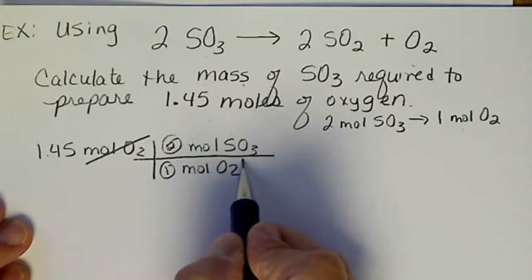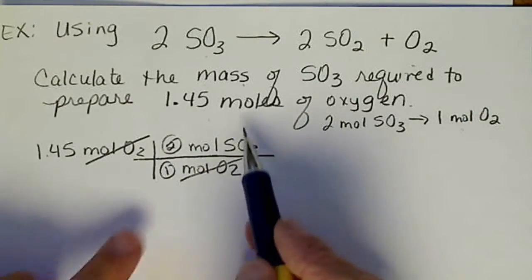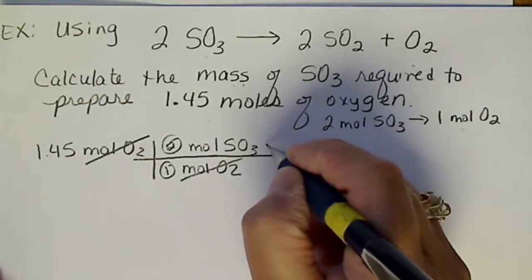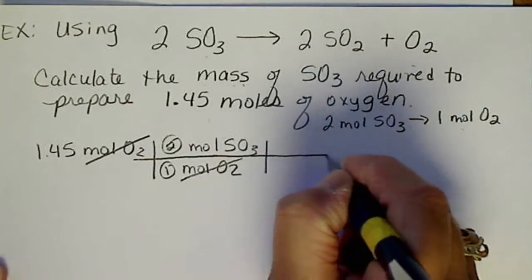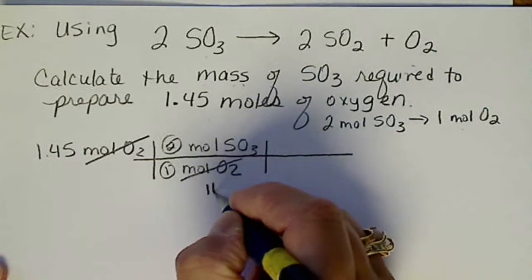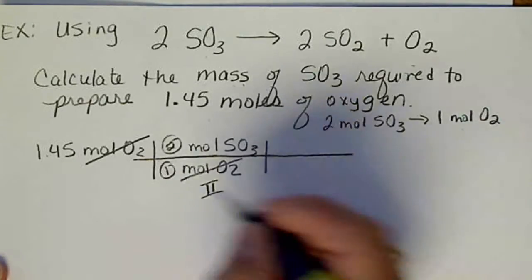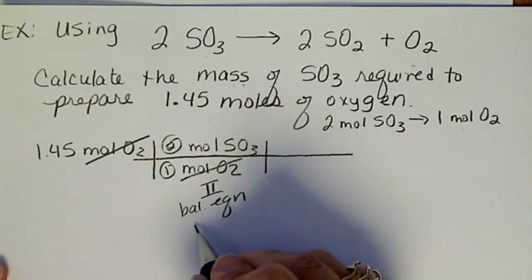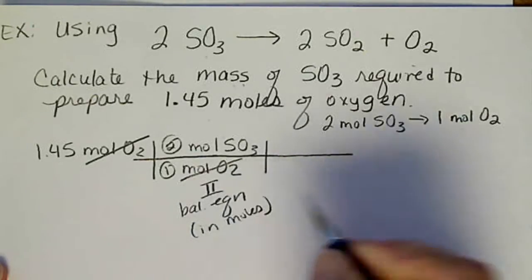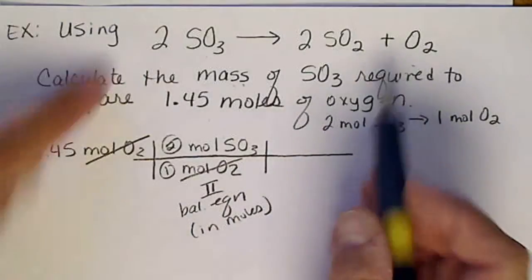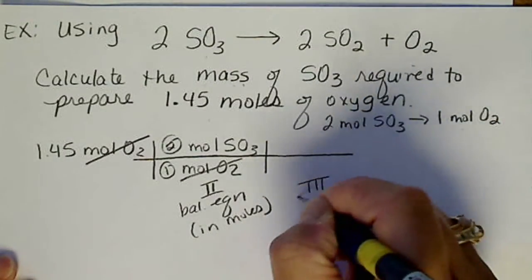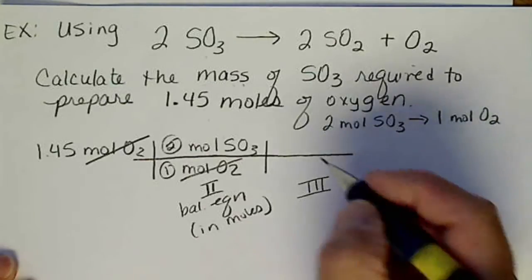And we can cancel our moles of oxygen. Read the problem. We're looking for the mass of SO3, so we still have to do one more step. So this is step 2, the balanced equation. And again, the balanced equation is always in moles. So the ratio is here, 2 to 1. Now we're going to have to do the molar mass step, and this is the molar mass of SO3.